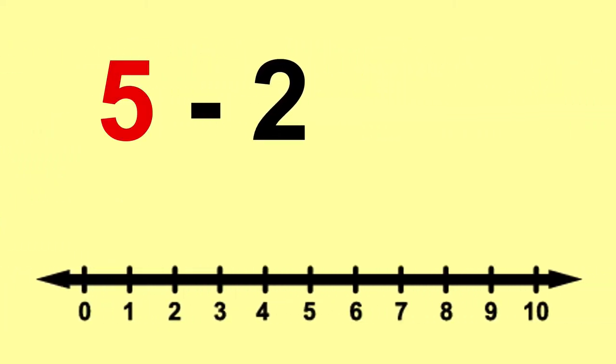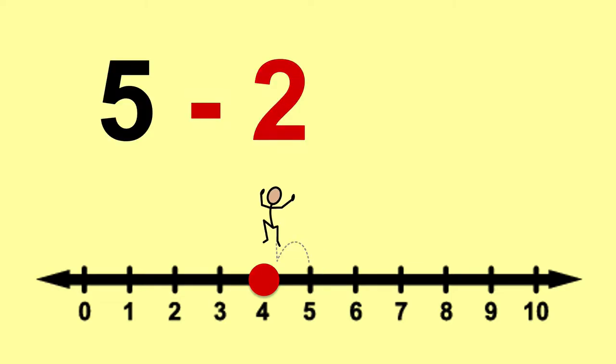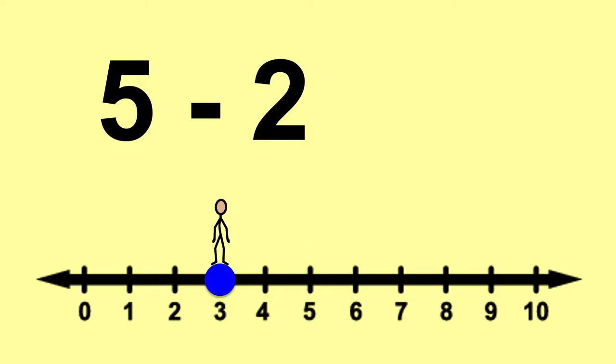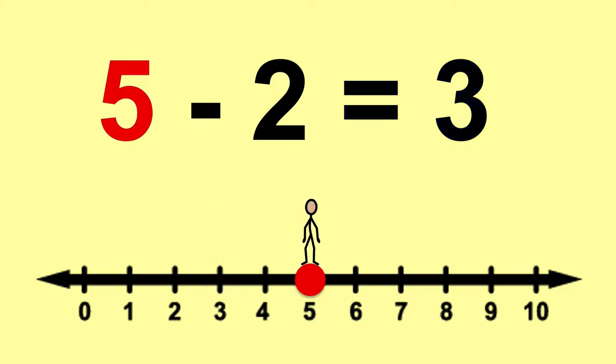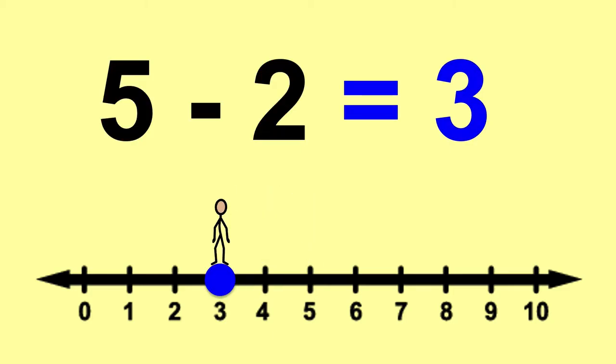5 minus 2. Start on 5, then jump 1, 2 to the left. 5 minus 2 equals 3.